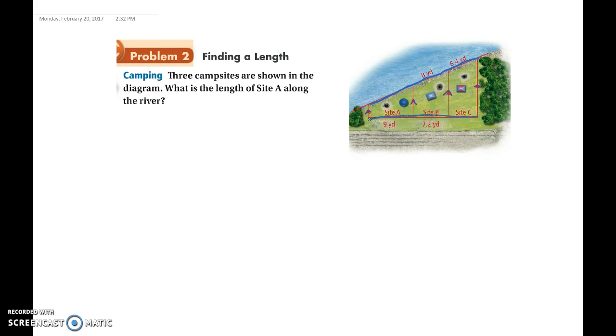So they want to know what is the length of site A along the river. They want to know what is this length here. So since these lines are all parallel, we know that this creates proportion. So we can then set up a proportion where it's the X, the unknown.